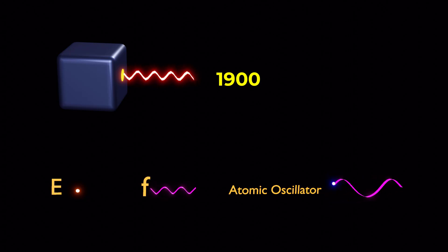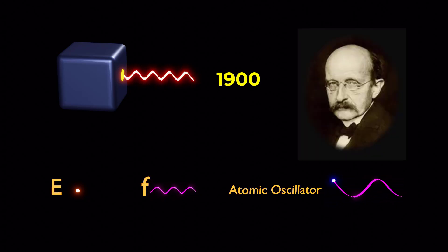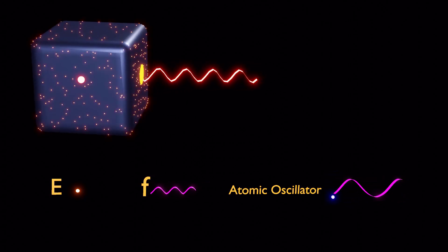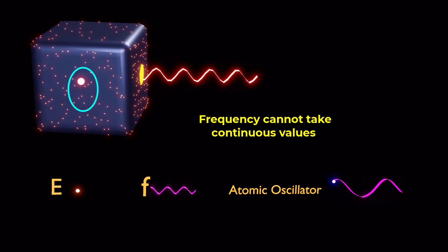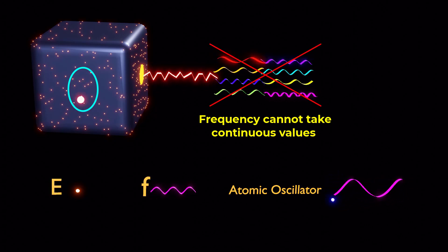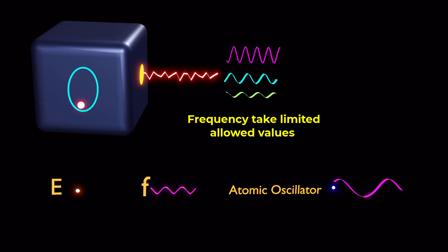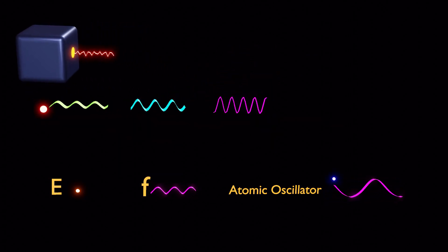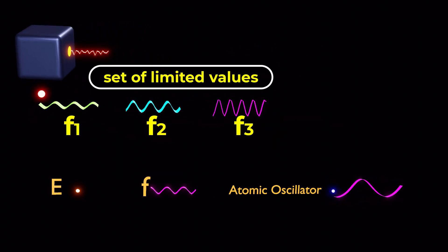Around the year 1900, a brilliant physicist Max Planck proposed a groundbreaking idea. He suggested that the oscillators within the walls of a black body cannot vibrate at a continuous range of frequency, but rather they oscillate at specific frequencies. The values belong to a set of limited values.